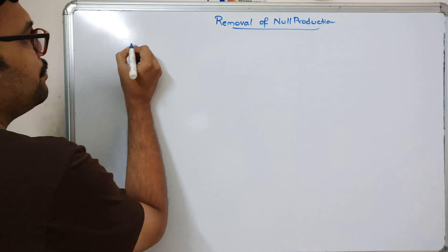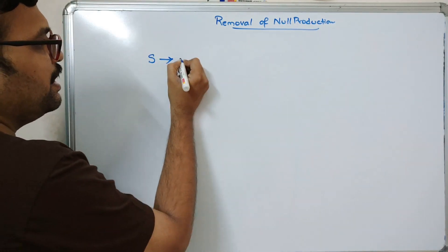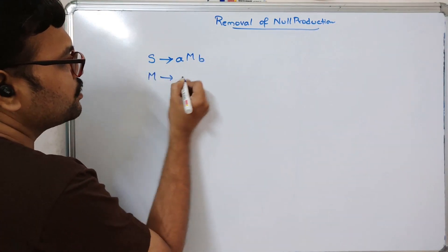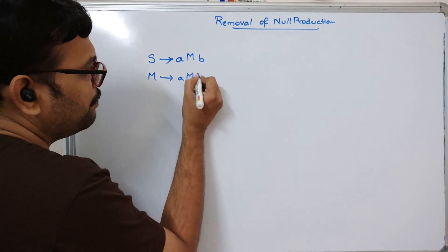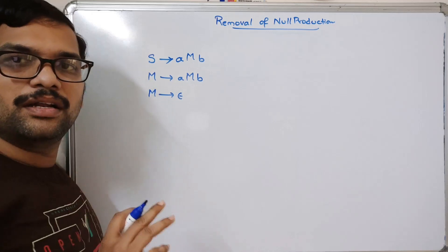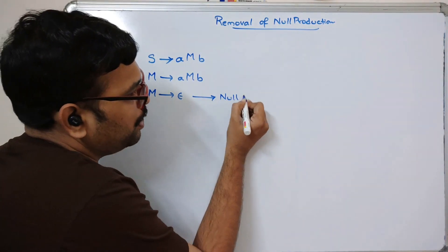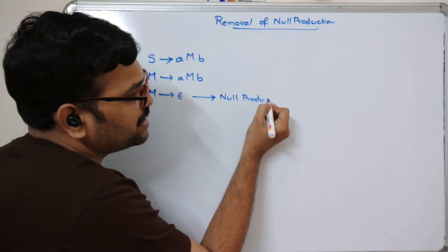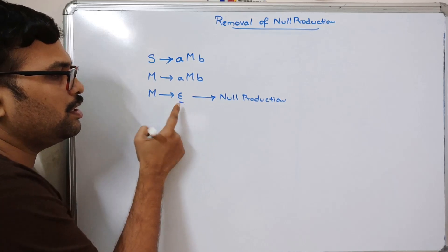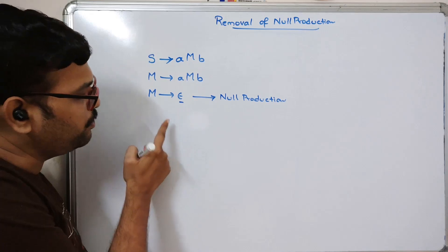Let us take an example. If S → aMb, and M → aMb, and M → ε, then M → ε is called a null production. We need to remove this null production.